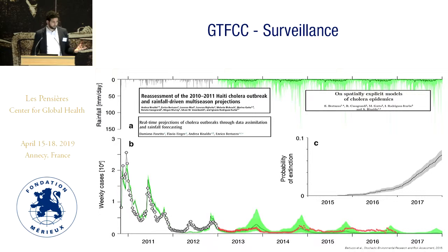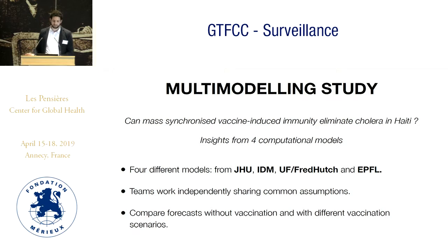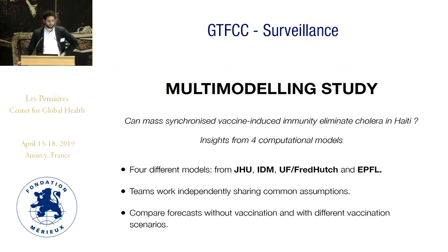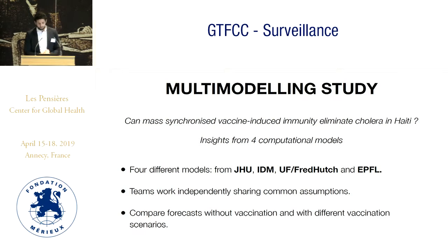Given that there were several groups working on cholera for years — people at Johns Hopkins, Ministère de la Santé, and Partners in Health — they put out a multi-modeling study. The goal was to answer the question: can mass synchronized vaccination and immunity eliminate cholera in Haiti? They used four computational models done by teams that worked on cholera previously: us, Johns Hopkins University, Institute for Disease Modeling, and University of Florida. The teams worked independently but shared common assumptions on vaccine efficacy, which we defined together. The goal was to compare scenarios with different vaccination plans versus no vaccination, and also to see whether the modeling community agrees on common results.